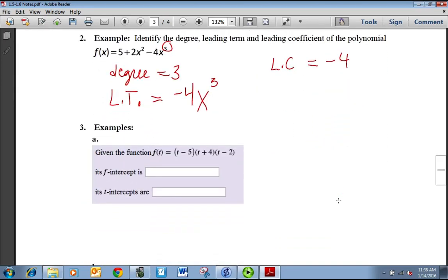In 5 + 2x² - 4x³, the degree is going to be 3 because the highest exponent is 3. The leading term is -4x³ because that's the one that has the highest exponent. And the leading coefficient is -4.